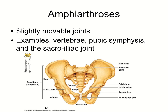Amphiarthroses are slightly movable joints. These would be your vertebrae and your coxal bones — so the sacroiliac joint and the pubic symphysis. Those are really important examples of amphiarthroses because as we walk, we need a little bit of flex in our hips to act as a shock absorber as we take steps, because there's a lot of pressure due to our vertical walking stature.